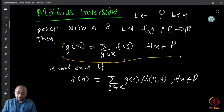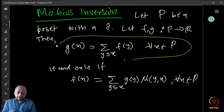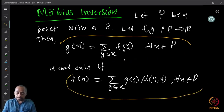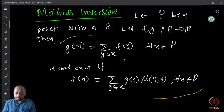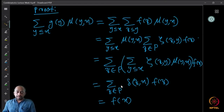The functions f and g map from P to ℝ, or in fact P to ℂ also works. Whenever g is expressed as a sum of f in this way, f is expressed as a sum in the other way. This result is called Möbius inversion and it is quite easy to prove — we just use the definition of the convolution product and work out the details.